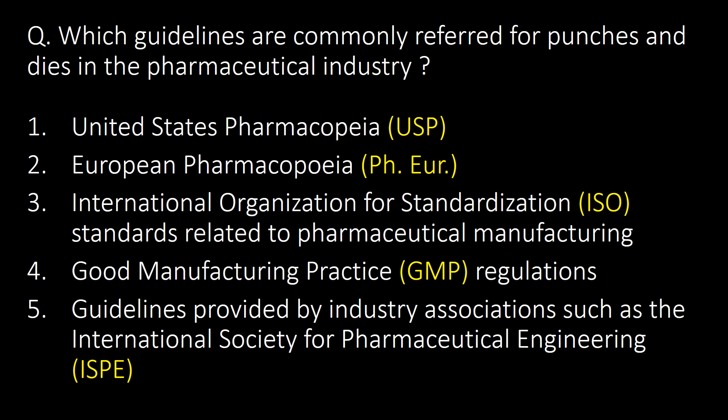The last and very important question: which guidelines are commonly referred to for punches and dies in the pharmaceutical industry? USP, European Pharmacopoeia, ISO, GMP, and ISP guidelines are commonly referred to for punches and dies in the pharmaceutical industry.